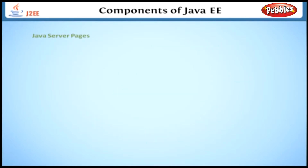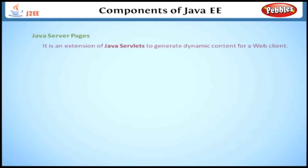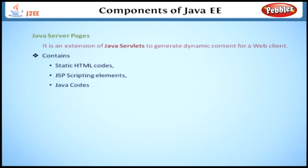Java Server Pages: The Java Server Pages or JSP technology is an extension of Java Servlets to generate dynamic content for a web client. A JSP page contains static HTML codes, JSP scripting elements, and Java codes. We will discuss about JSP pages later in detail.